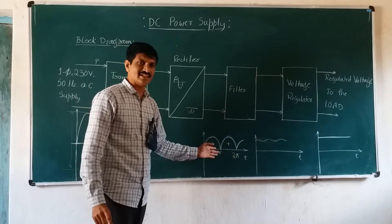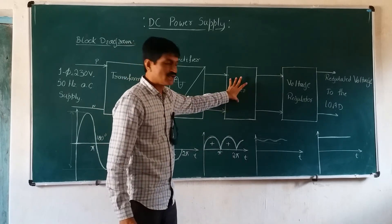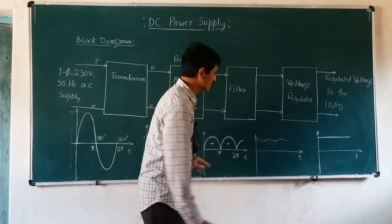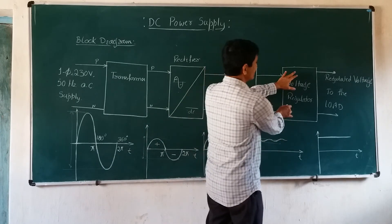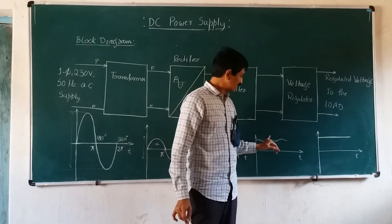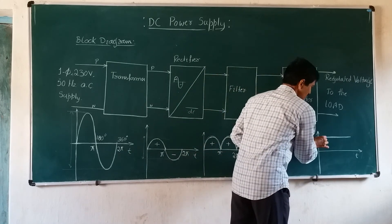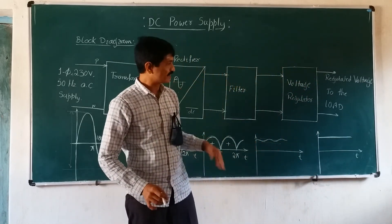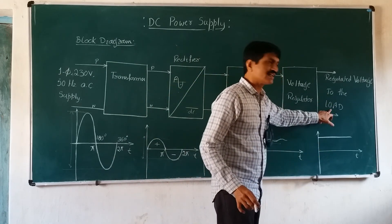The pulsating DC is then subjected to the filter process in the filter block, where all pulsations are reduced to the maximum extent and the ripples are reduced. This output is then passed through the voltage regulator block, where the remaining pulsations from the filter output are removed, and a constant level of voltage at the desired level of current is obtained. This quality of power is then supplied to the required load.